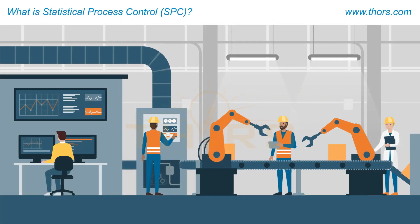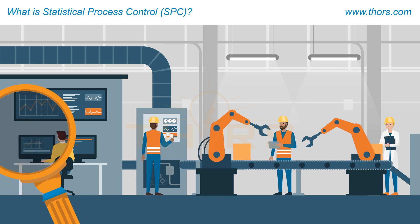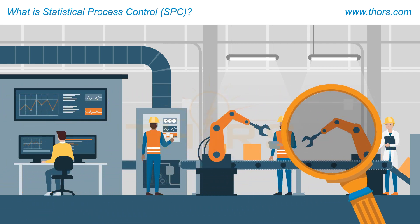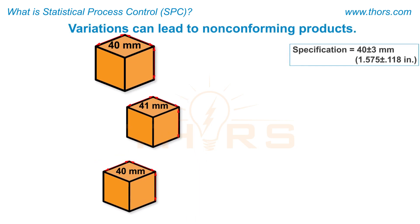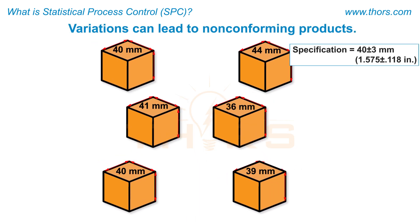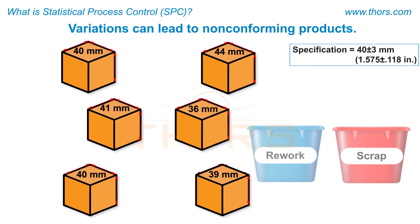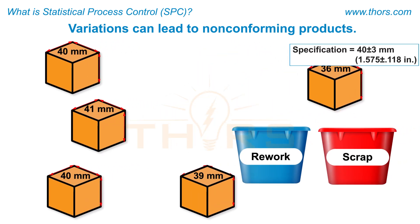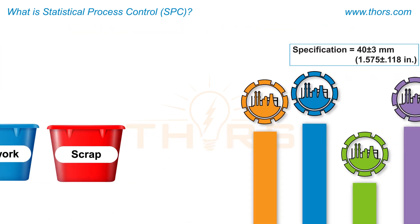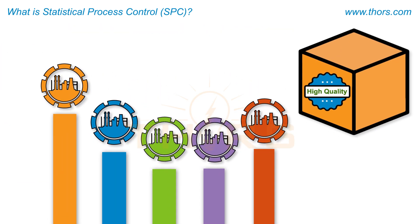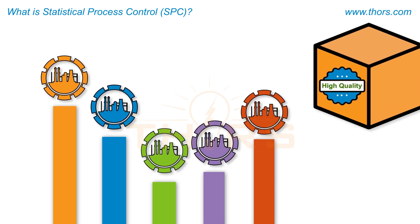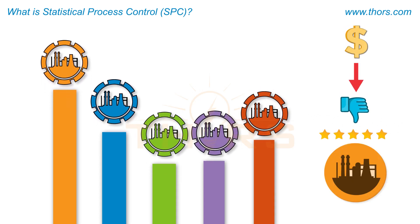Statistical Process Control, or SPC, is the statistical method of observing a process in the actual environment to control the process. SPC is applied to a process to reduce variations. Variations cause inconsistencies that may require reworking or scrapping of non-conforming products. The success of any organization depends upon delivering high-quality products consistently.